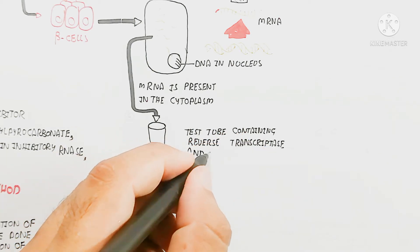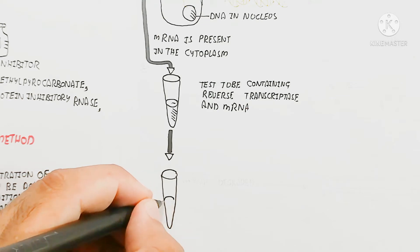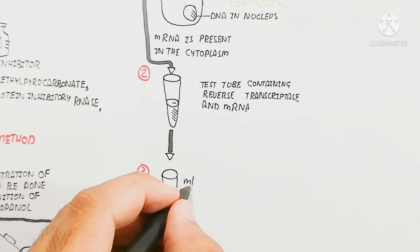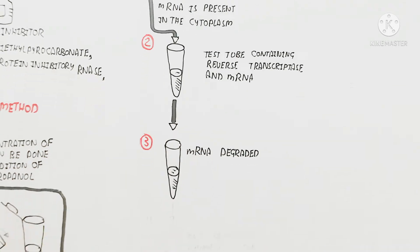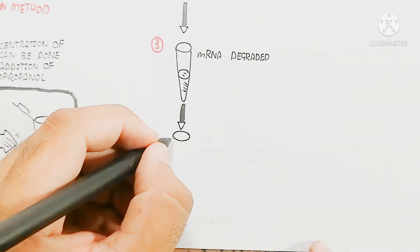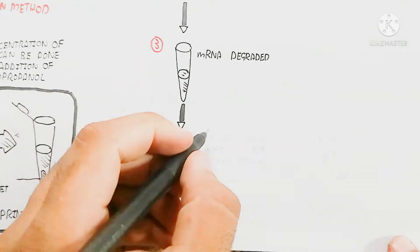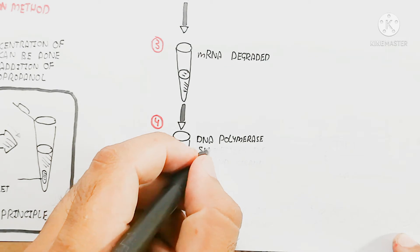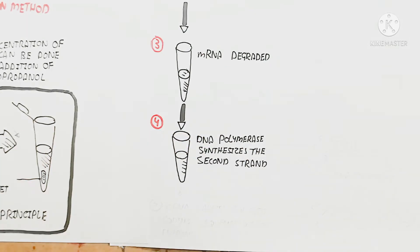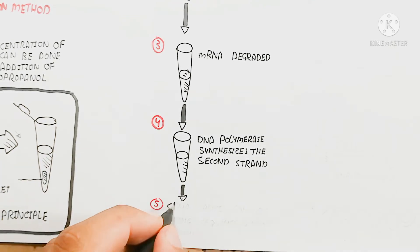Step two involves a test tube containing reverse transcriptase enzyme and messenger RNA. Reverse transcriptase is an enzyme used for the reverse transcription of messenger RNA into double-stranded DNA. The process involves producing recombinant DNA in bacteria to produce insulin, which we will discuss next.